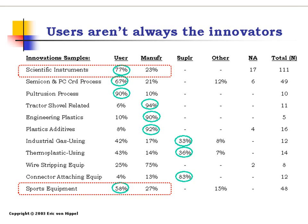Von Hippel started by asking a simple question: where do the initial ideas regarding an innovative product or service come from? Did they come from manufacturers — the people that profit from selling an idea — or from users — the people who profit from using a product or service? On the basis of this distinction, Von Hippel discovered that in many fields, the majority — or anyway a large percentage — of ideas leading to innovations were developed by users, not by manufacturers.